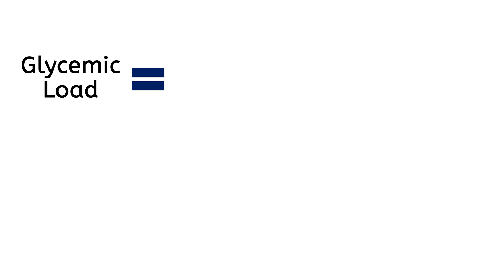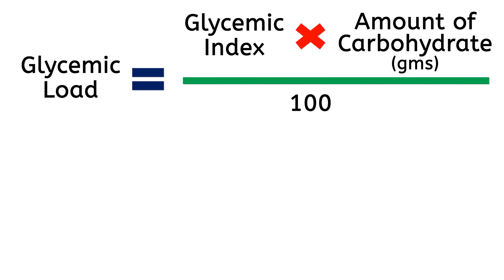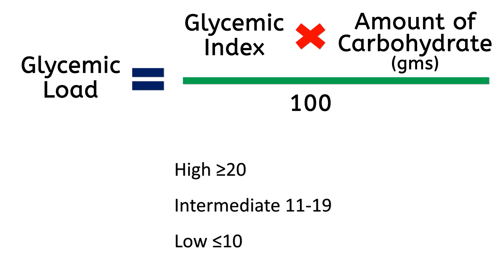Glycemic Load is calculated by multiplying the Glycemic Index of a food by the amount of carbohydrate in grams that the food item has, and dividing by 100. Glycemic Load is labeled as high if it is greater than or equal to 20, intermediate if it is in the range of 11 to 19, and low if it is less than or equal to 10.